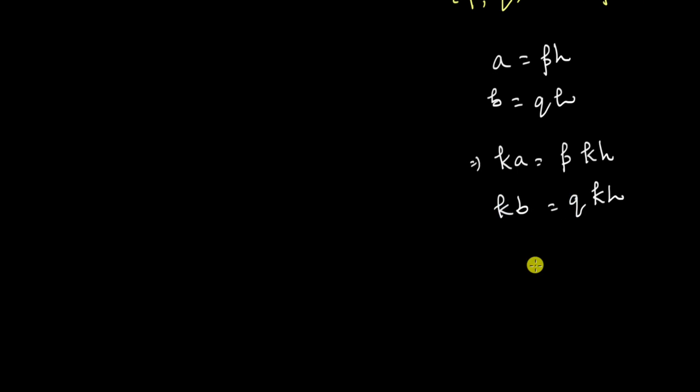So now we have two numbers, ka and kb and p and q are multiplied with kh where p and q are co-primes. What does this mean? This means that kh is the GCD of ka and kb.